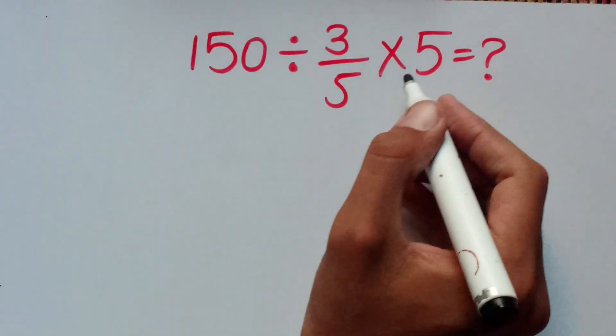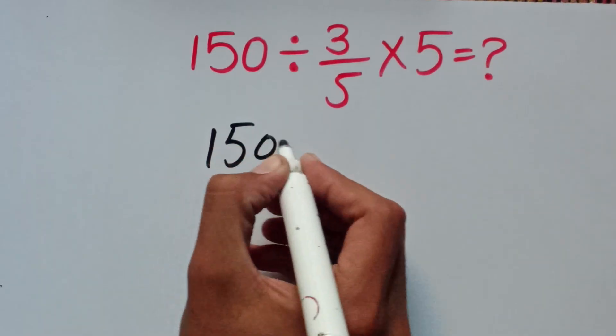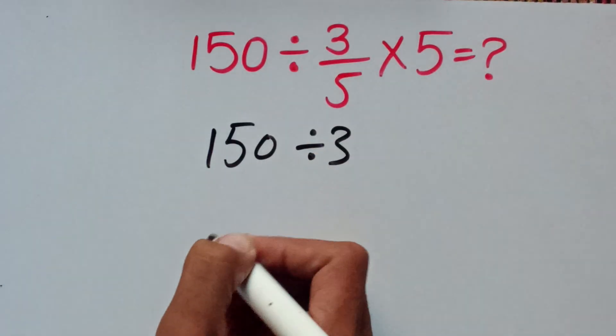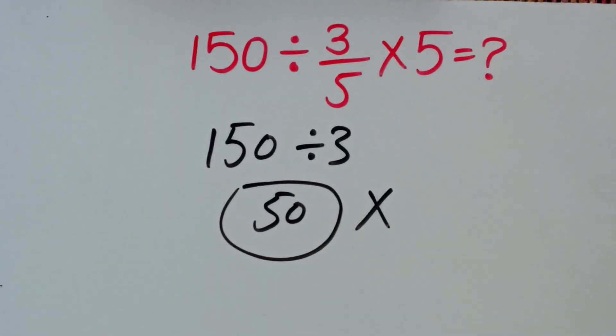First, we can cancel and solve 150 divided by 3, which equals 50. But this answer is absolutely wrong.